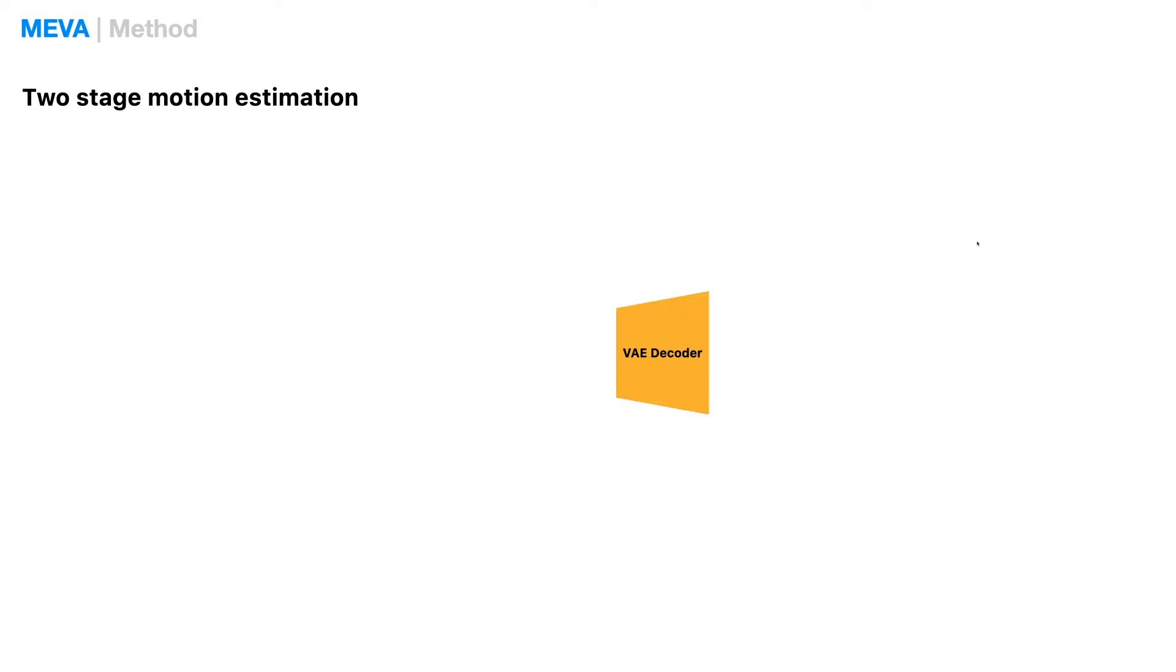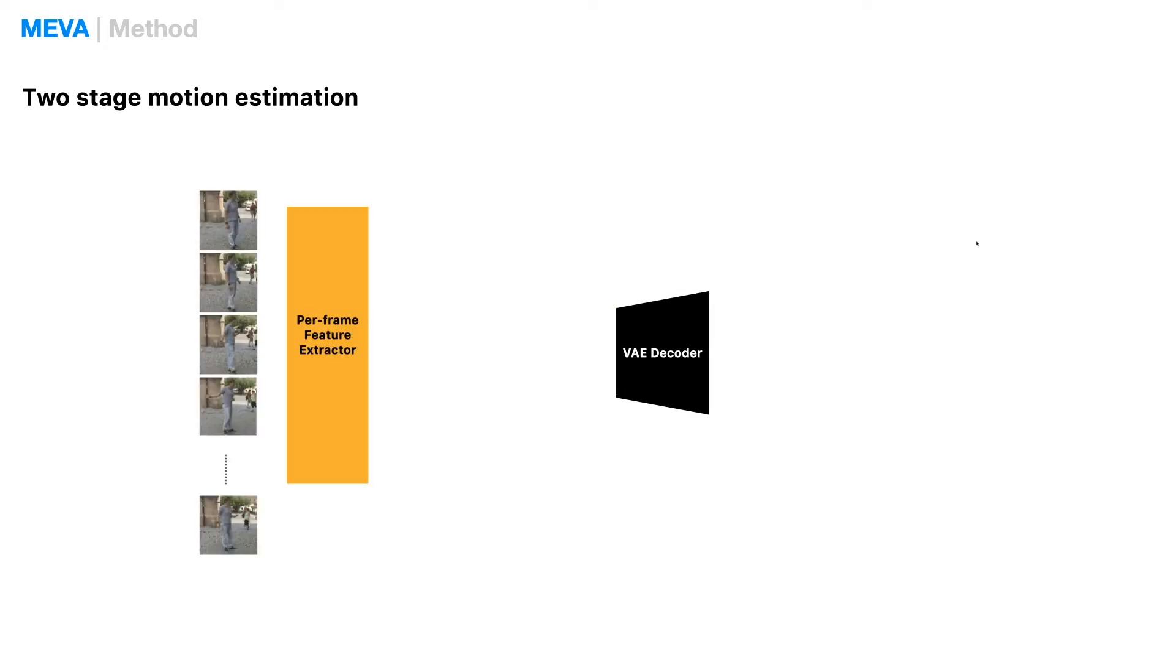After we learn this human motion VAE, we freeze the decoder and use its latent space as a regression target. Given an input video, we first extract per-frame features, and then we learn an additional video encoder to directly predict motion latent code from the visual features.